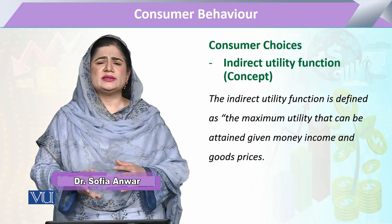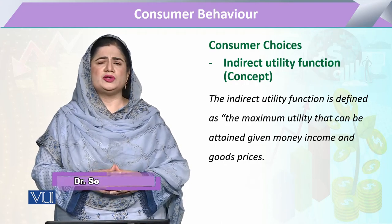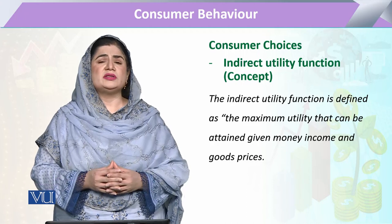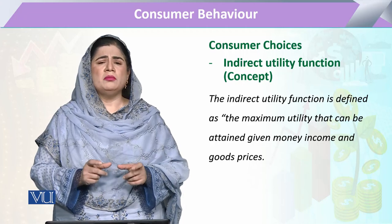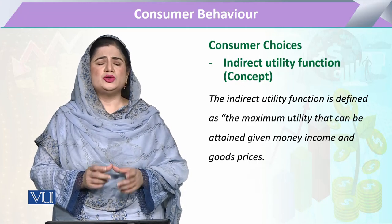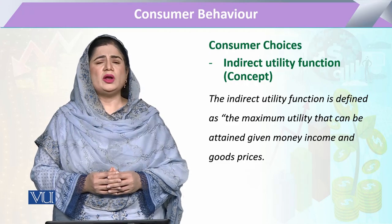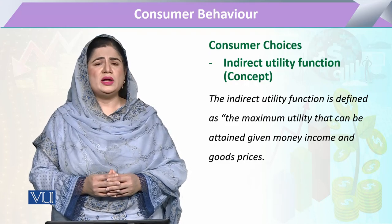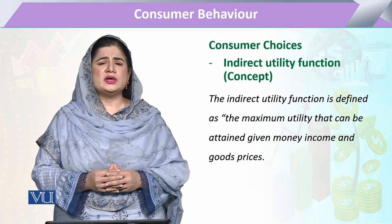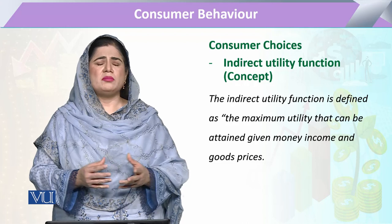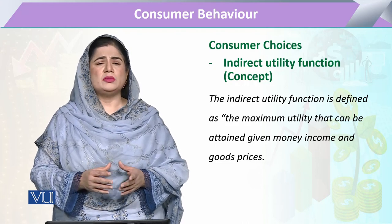You will notice that this is a similar type of definition to what we had for utility, but the main difference is that here we are using the term money income. This is the utility maximization of a consumer when we keep his nominal income constant — we are concerned with maximizing utility, not holding utility constant.